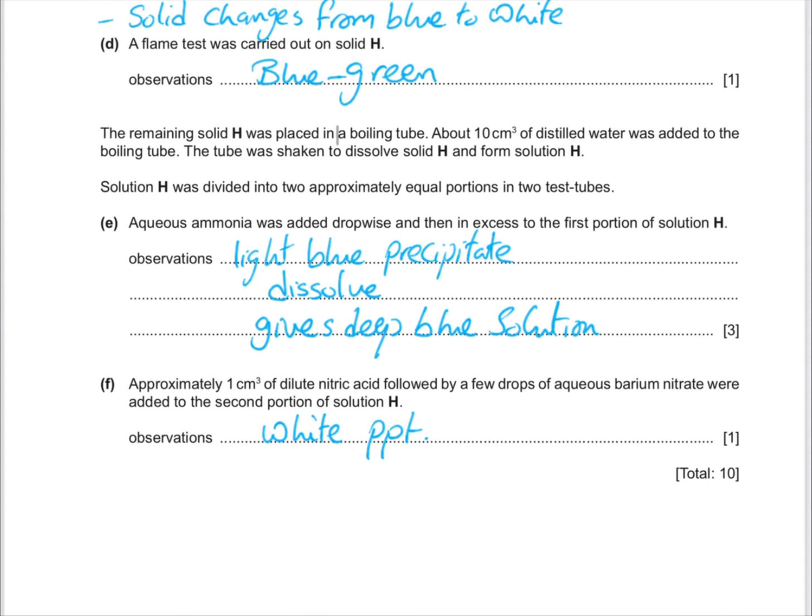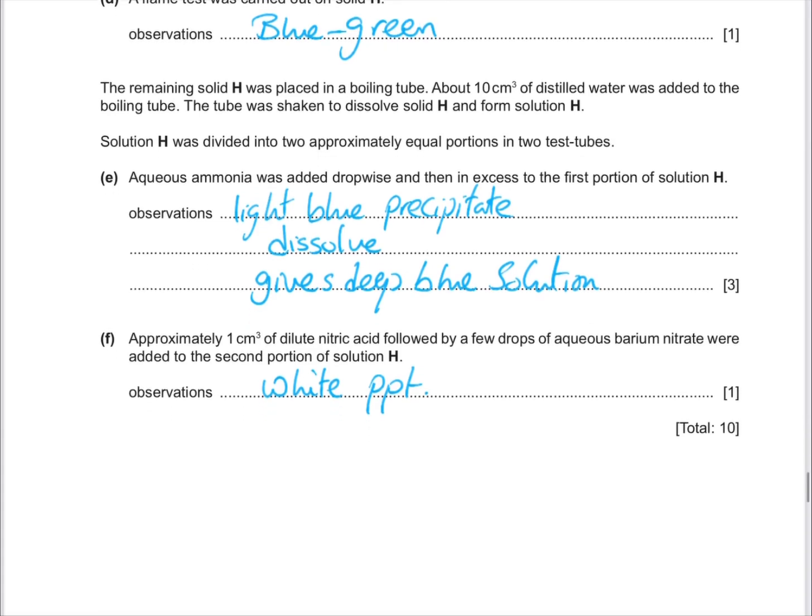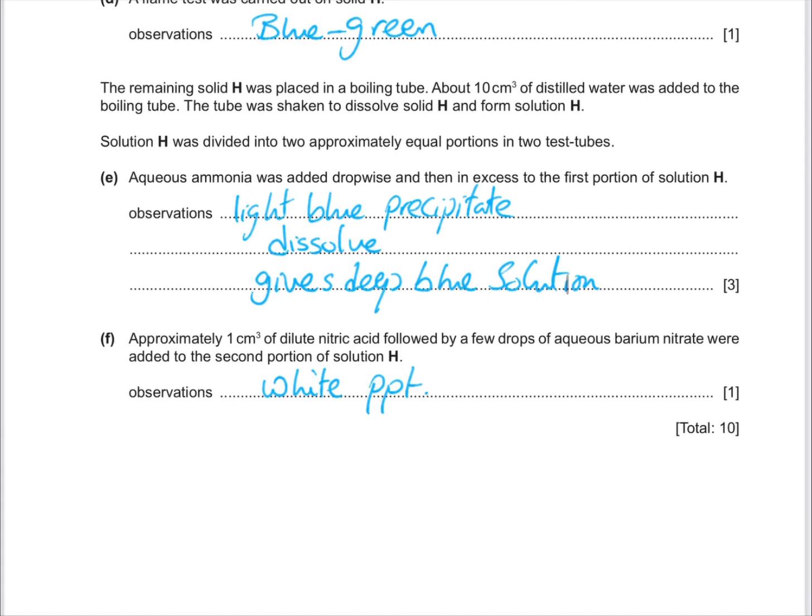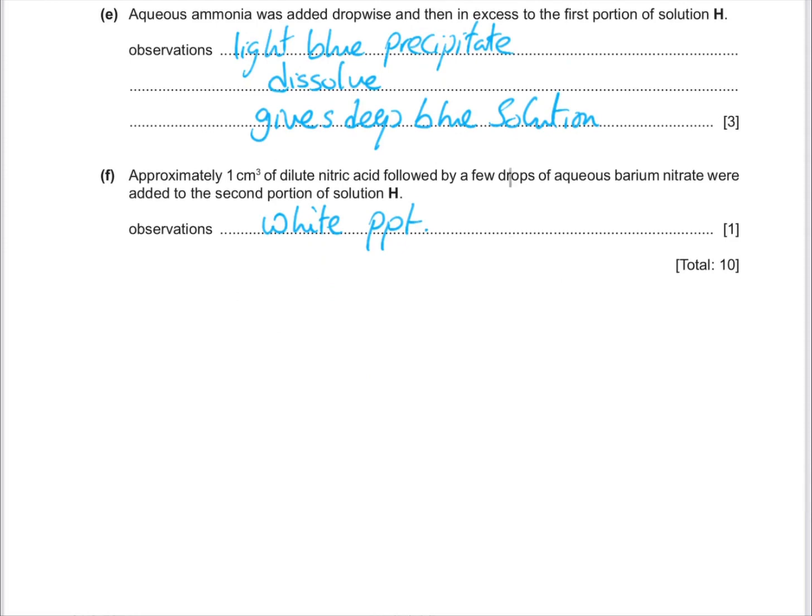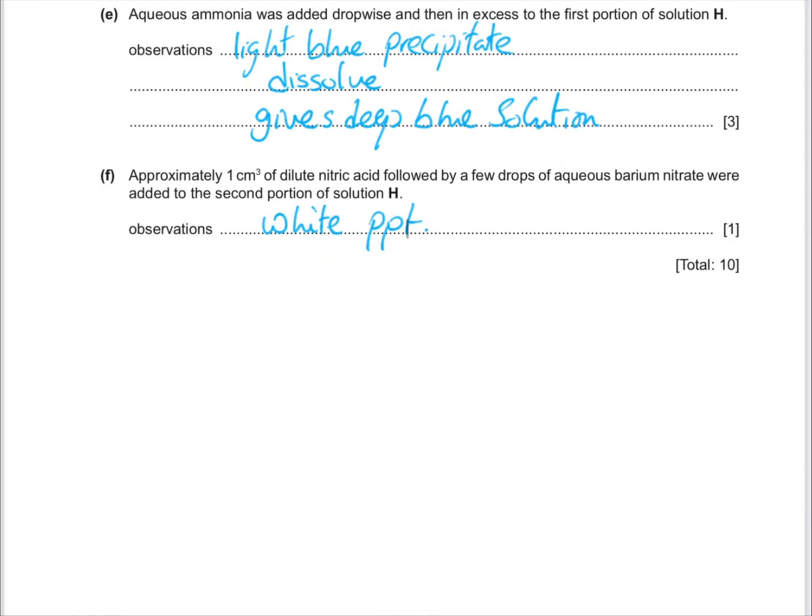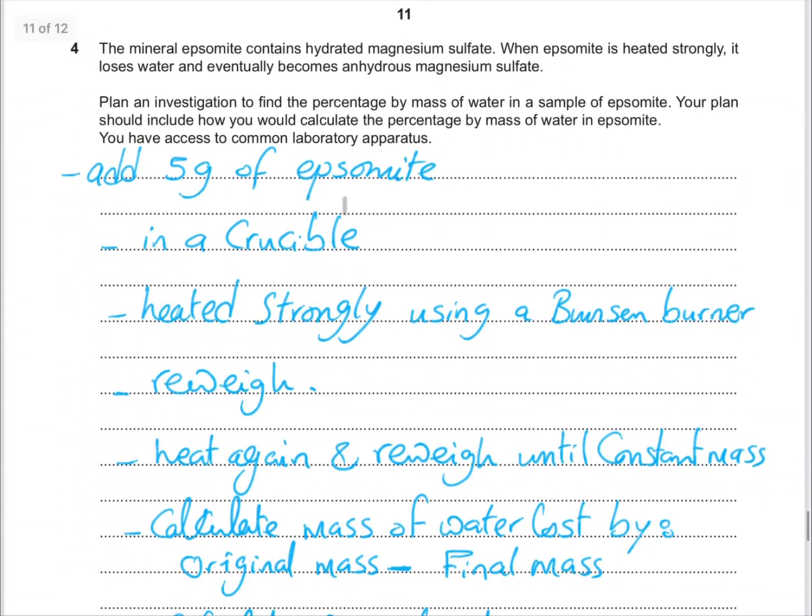Then the remaining solid H in the boiling tube, and we will add 10 cubic centimeters of distilled water added into the boiling tube. And the tube will dissolve solid H and we will have solution H. After that we put dilute nitric acid and barium nitrate and we have sulfate, we will get white precipitate.